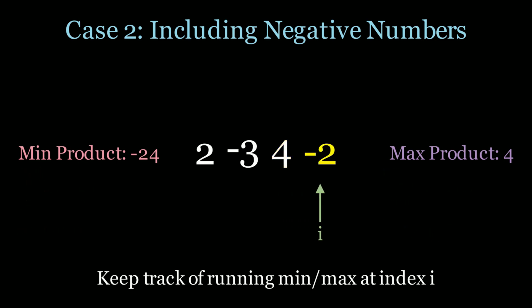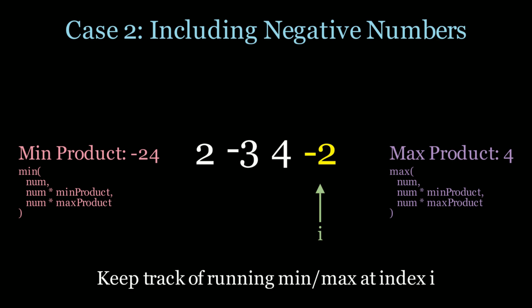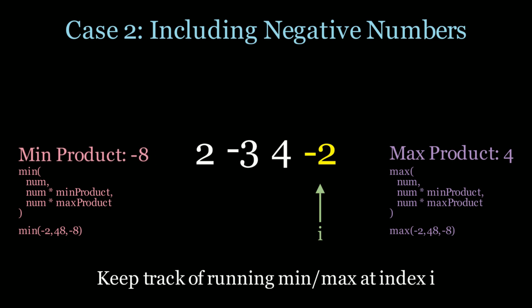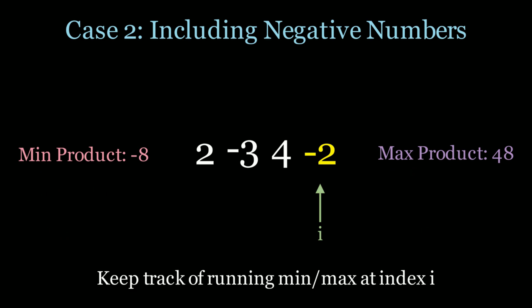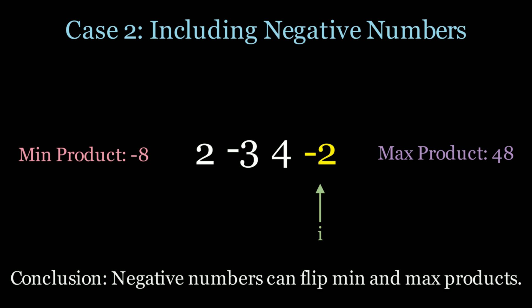Now we go on to the next element, negative 2, and run the same process. For the min product we're looking at the minimum between negative 2, 48, and negative 8 — which is negative 8. Then look what happens to the max product: we take the maximum between negative 2, 48, and negative 8. Because the min product was negative 24 and we're looking at negative 2, negative 2 times negative 24 is positive 48 — so the max product becomes 48. That's why it's very important to keep track of both the min product and the max product. The conclusion: negative numbers can flip the min and max product values, so we track both.